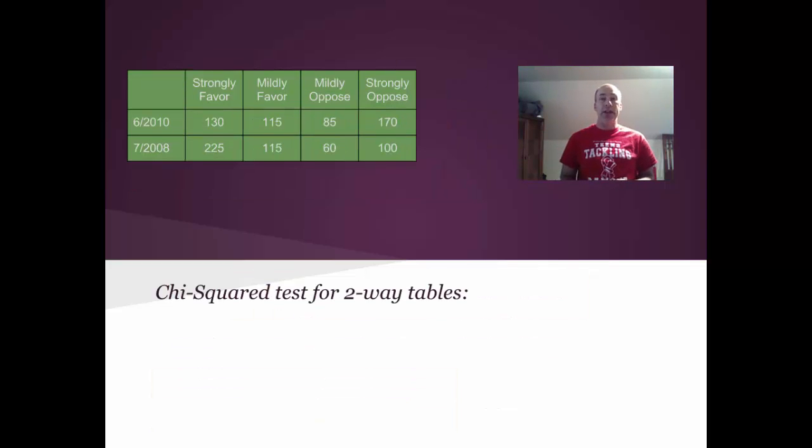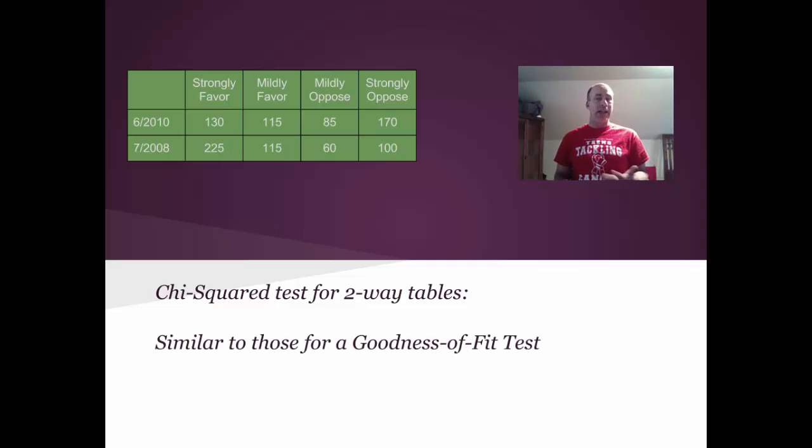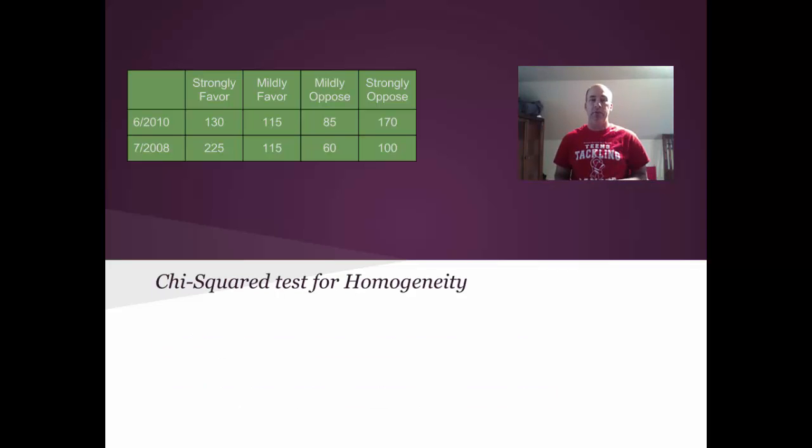So the chi-squared test for two-way tables. Here's the nuts and bolts of the test. Well, the good news is that the conditions are very similar to those for a goodness-of-fit test. We're going to need random samples here. We won't be able to have any small groups. We want all the expected counts to be greater than or equal to five. And we'll need independence in a couple of places here, and I'll explain that as we go through the test. So let's just dive right into the testing here.